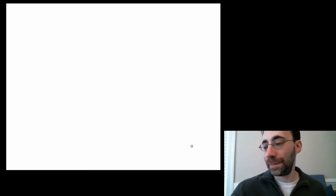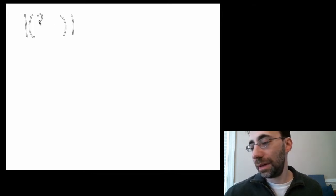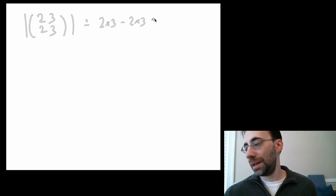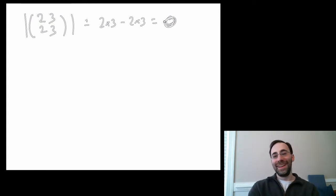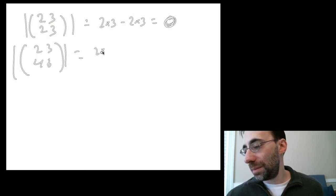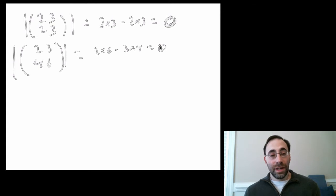And I'll do one more example of 2 by 2. This one would be 2 times 3 minus 2 times 3 equals 0. This matrix is singular. You can also tell that by the fact that the two rows are exactly the same, but they don't need to be. You can come up with ones that are singular for reasons of not being exactly the same. So for instance, if the first one is a multiple of the second one, or vice versa, here is 2 times 6 minus 3 times 4, which is also 0.